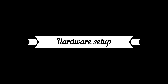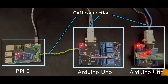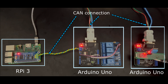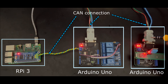Let's check the hardware setup. Here you can see the three CAN nodes: two Arduinos on the right and middle, and one Raspberry Pi on the left connected to the CAN network. The right-side node is the sensing node, with a DHT11 connected to the Arduino and a CAN shield on top. This node will sense the temperature and humidity values and transmit them across the CAN network.